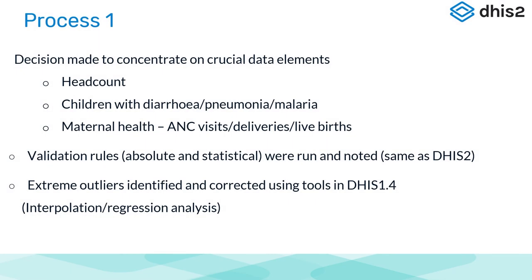Some crucial decisions were made. The first was to concentrate on the headcount — knowing how many people access health services is crucial to understanding how much money and how many resources you need. Then they looked at children with diarrhea, pneumonia, and malaria as a vulnerable population, and maternal health in terms of antenatal visits, deliveries, IPTP, and related indicators. Validation rules — both absolute and statistical — were run, and any violations triggered were noted, using the same process as in DHIS 2.